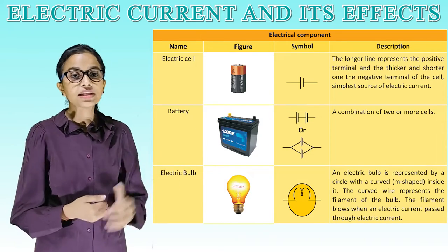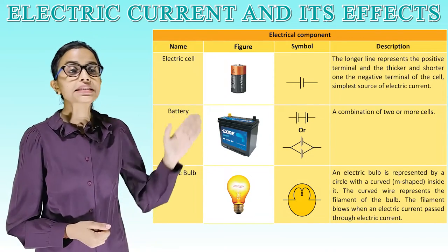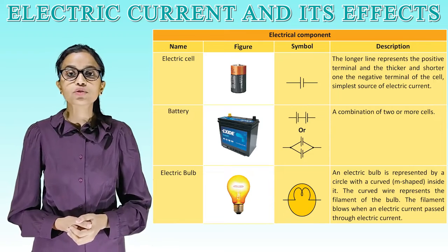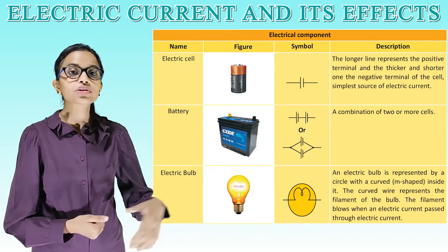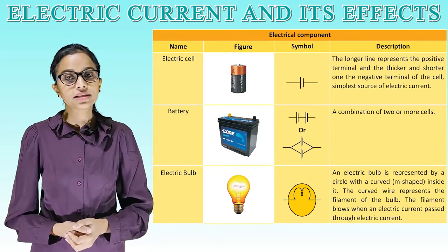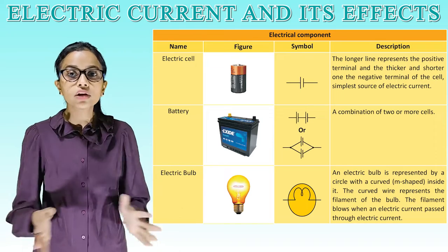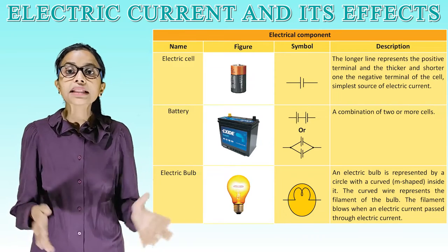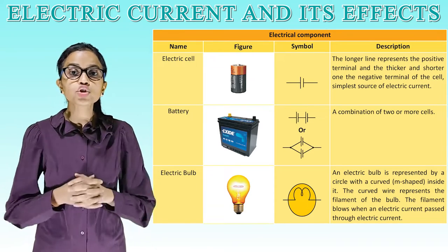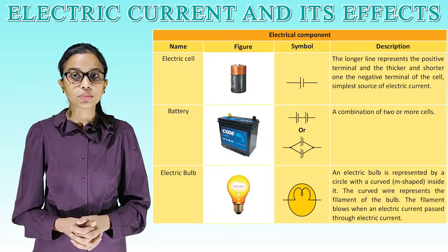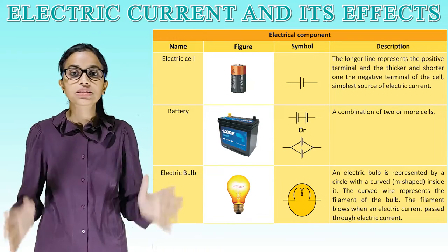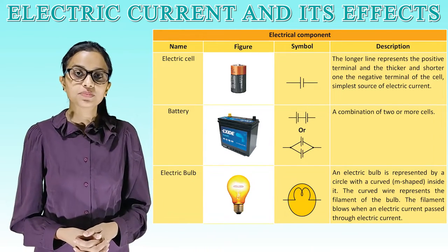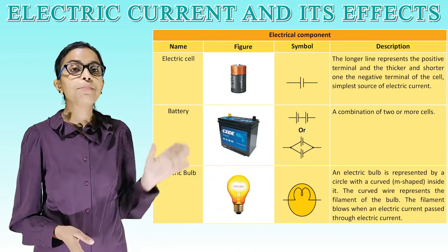The first component is the electric cell. This is the picture of the electric cell, and this is its symbol. The longer line represents the positive terminal and the thicker and shorter one represents the negative terminal of the cell. It is the simplest source of electric current.